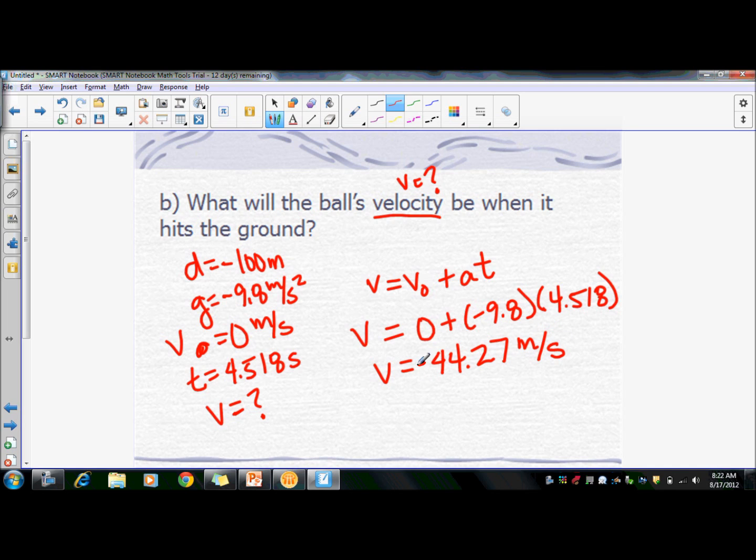So that's a negative, right? Negative 9.8, negative 44.27. The negative indicates it's falling down. Negative down.